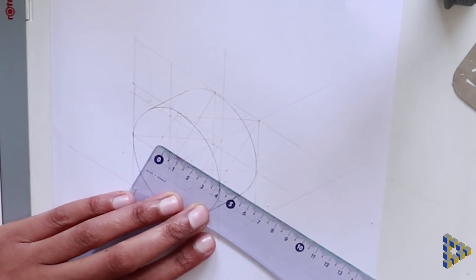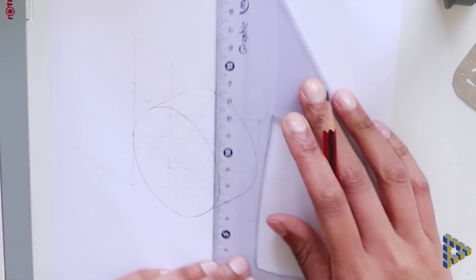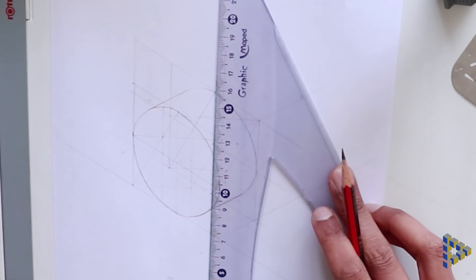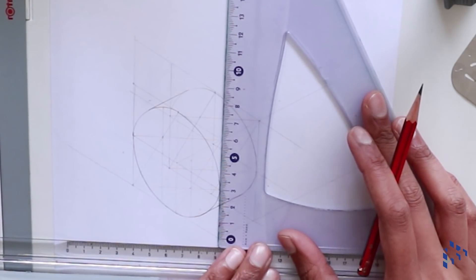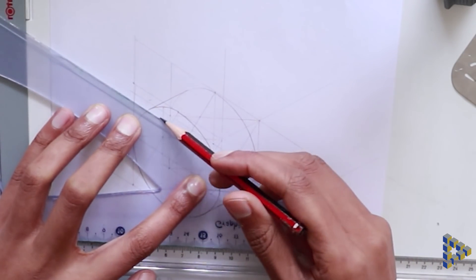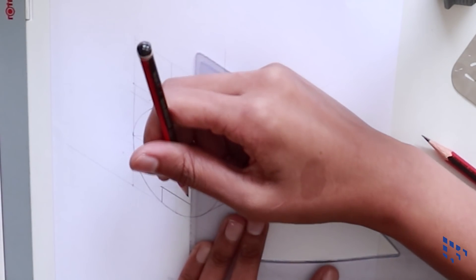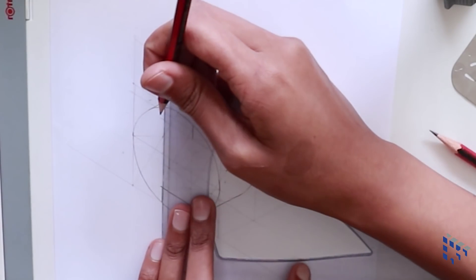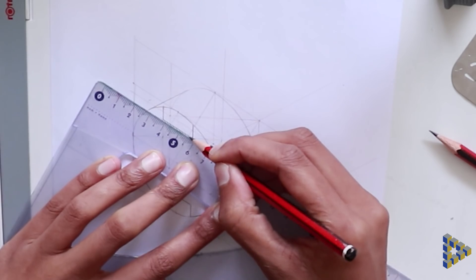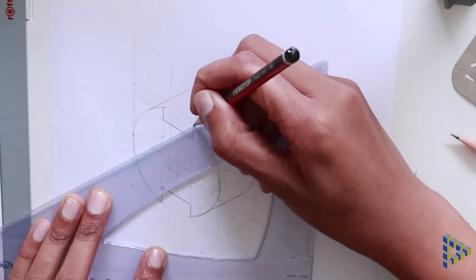Now draw the rectangular cutouts by measuring 10mm on either side of the isometric circle centerline, resulting in a width of 20mm, and 10mm from the top and bottom of the circle to achieve the height of the cutout. Extend the cutout through the depth of the circular section.